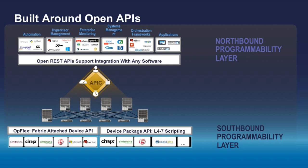In our ACI environment we have a very open API model where you can program hypervisors, service chaining with firewalls and load balancers, orchestrators with OpenStack, CloudStack, Red Hat, etc., storage, applications, and servers. On the southbound API level we have the different operating systems. This is a key benefit of the Cisco ACI solution.